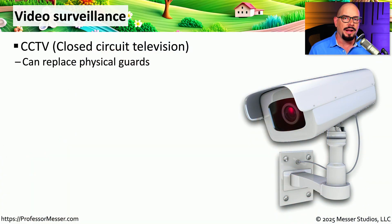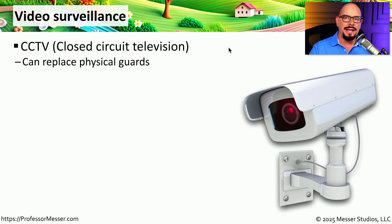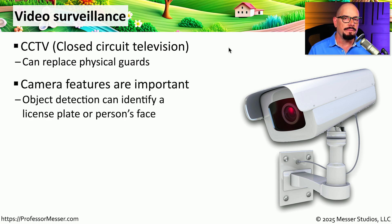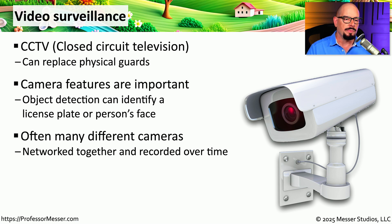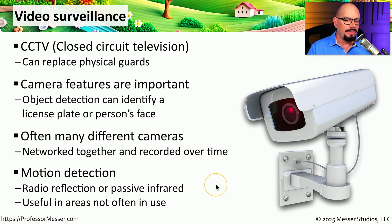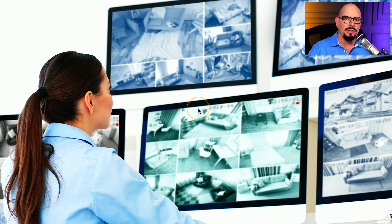Video monitoring has become very popular and economical, and many organizations use video monitoring or CCTV — closed circuit television — to see what's happening in and around their building without someone physically present. Modern cameras are very intelligent: they can identify vehicle types, read license plates, and provide feedback based on what they see. All cameras are networked together and feed back to one central recording station. Using radio reflection or infrared, especially at night, cameras can detect motion and trigger an alarm on your console, allowing one person to monitor cameras across the entire organization.